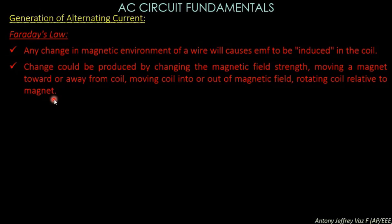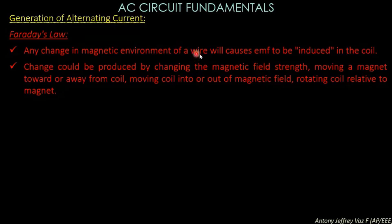The first way is to move the coil with the magnet fixed. If your magnet is fixed and your coil is rotating, then the coil will produce an electromagnetic voltage, which is the induced voltage. Otherwise, if the coil is fixed and the magnet is moving, then also a voltage will be induced in the coil. So as per Faraday's law, any change in the magnetic environment of a coil or wire will cause an EMF to be induced.